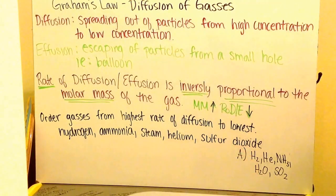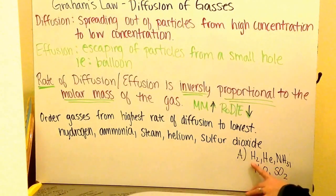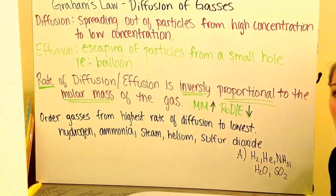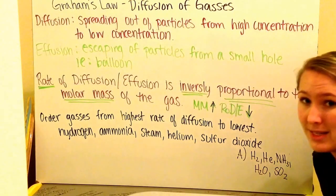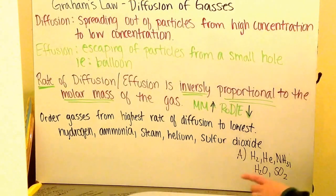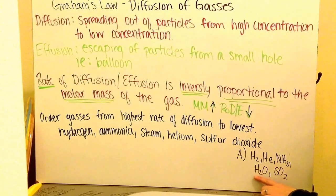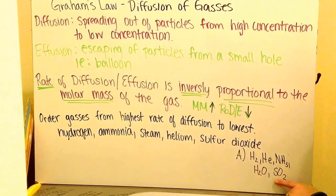You should have found that our highest rate of diffusion is our H2 because it has the lowest molar mass. In other words, it's the lightest and it can move the quickest. It's then followed by helium, ammonia, water, which is steam, and then sulfur dioxide, which is the heaviest, so it's going to move the slowest.